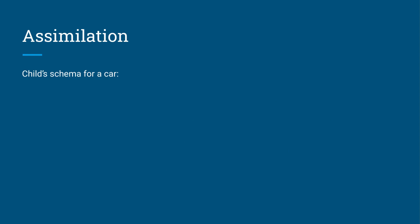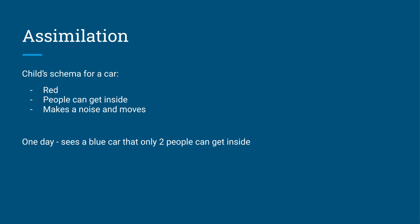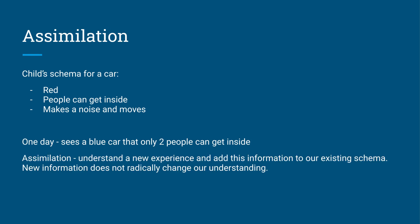Piaget talked about an idea of assimilation regarding schemas. So let's take a child's schema for a car - they might think a car's red, people get inside it, it makes a noise and it moves. And then one day they see a blue car, a little sports car that only two people can get inside. Now this would be an example of assimilation. They're understanding a new experience and adding this information to their existing schema. This new information doesn't radically change their understanding - people can still get inside, it still makes a similar noise, it moves in a similar way. We're adding to our schema. That's an example of assimilation.